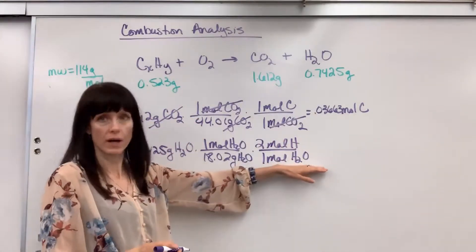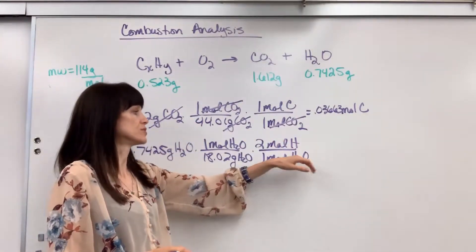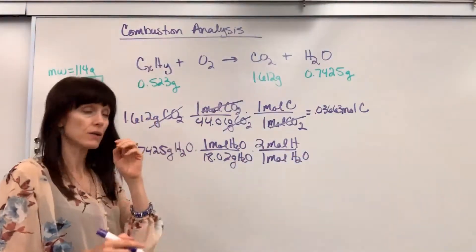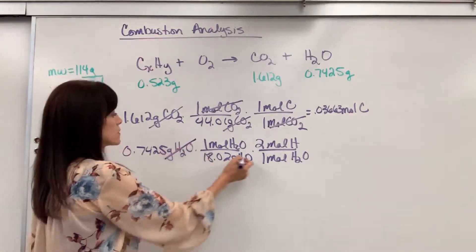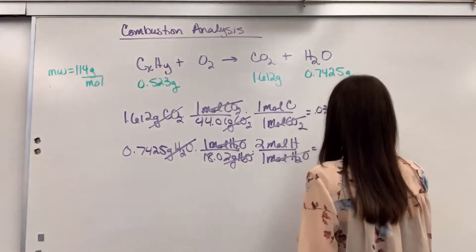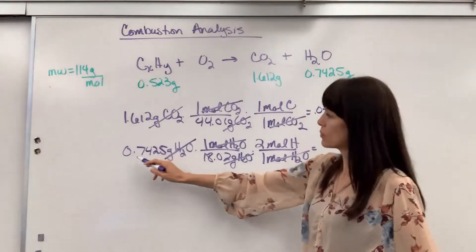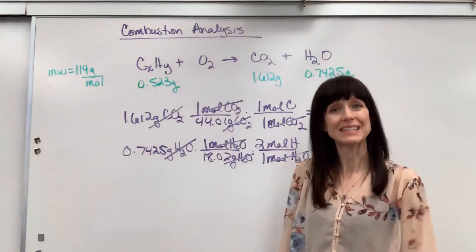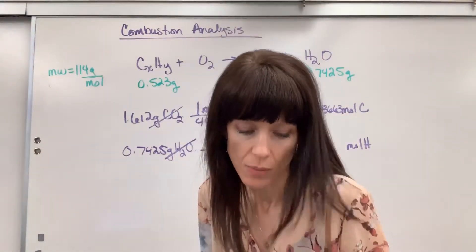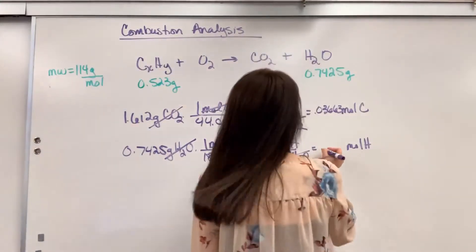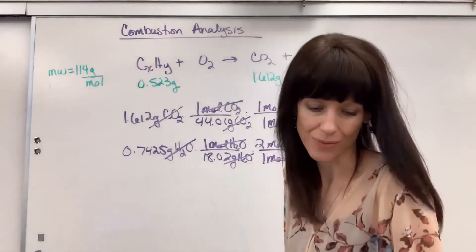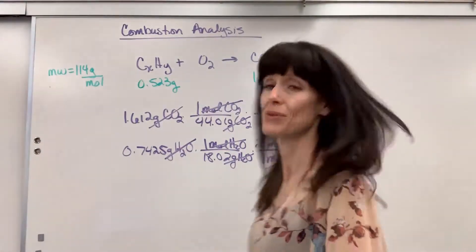Now we want to get rid of water and end with just the hydrogen. So one mole of water contains how many moles of hydrogen? Two. For every one water molecule, there's two hydrogens. Look at our units together. We cancel the grams of water, the moles of water, and we end with moles of hydrogen. 0.7425 divided by 18.02 times two gives us 0.08243.